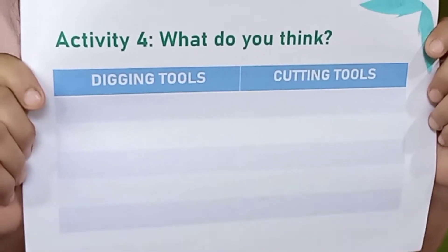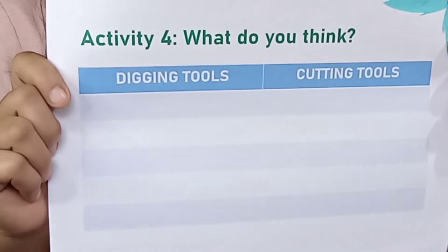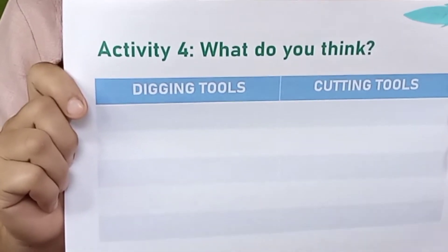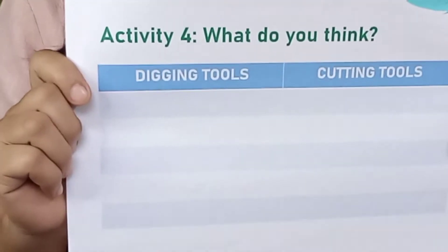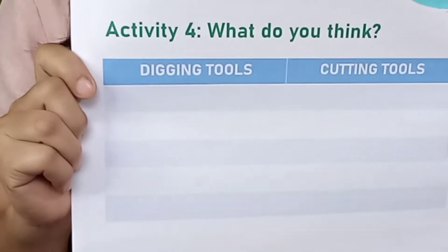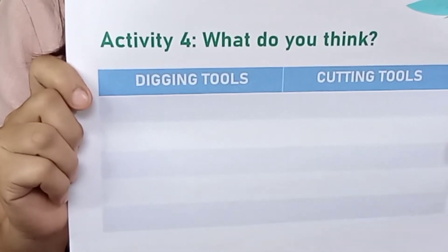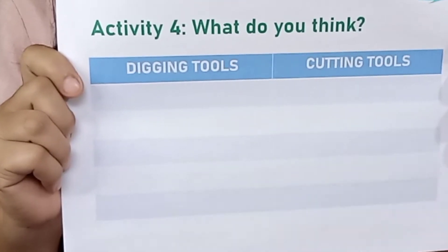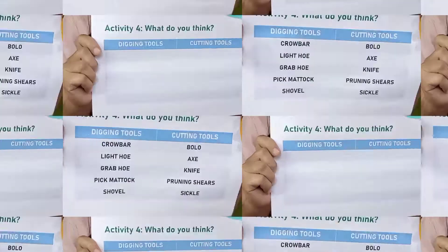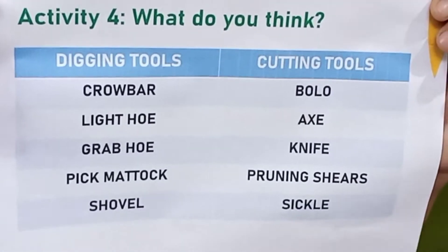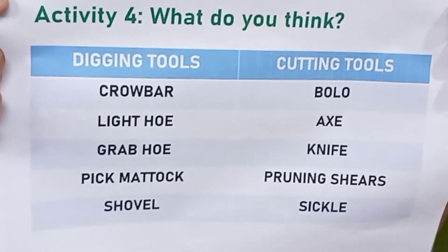And now, activity number four. You can get a piece of paper to think of the farm tool which is used in digging and cutting. Your answers are great. Here are some examples of digging tools.